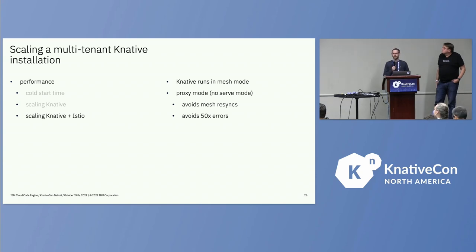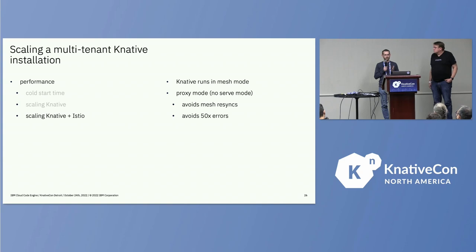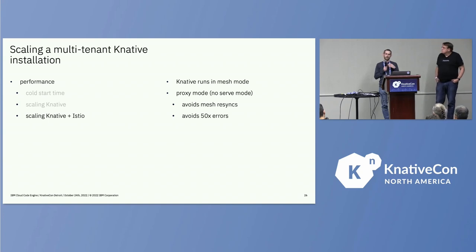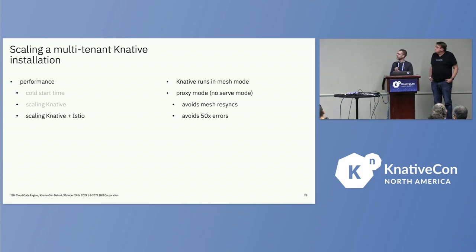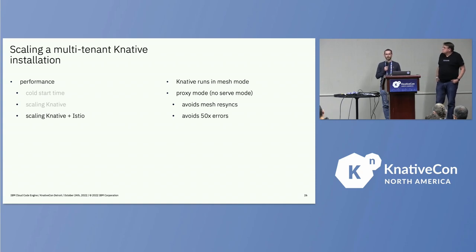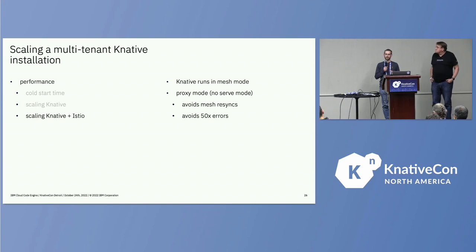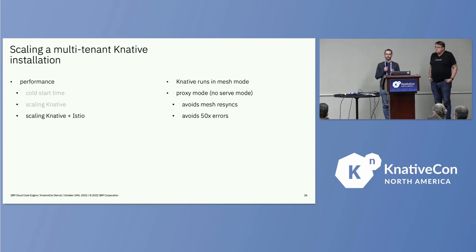Coming to the Istio section: around Knative 1.4, mesh mode was supported. We run with mesh mode enabled to avoid the default behavior where Knative tried to go directly to the pod first, then fell back to cluster IP. We run in proxy mode — the activator is always in-path to avoid re-syncs on Knative and Istio. If that's not the case and the activator is brought back into path when scaling up further, the activator needs service information for that service at that time. If Knative switches the endpoint but Istio hasn't sent the correct information yet, the user will see 503s, and we want to avoid that.